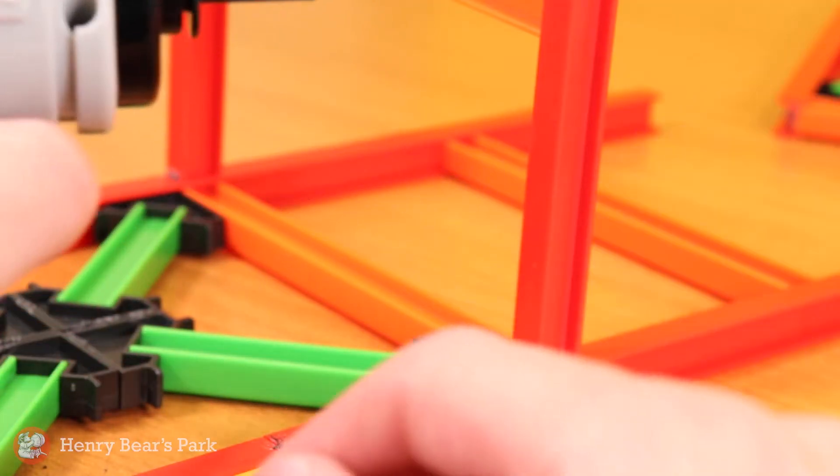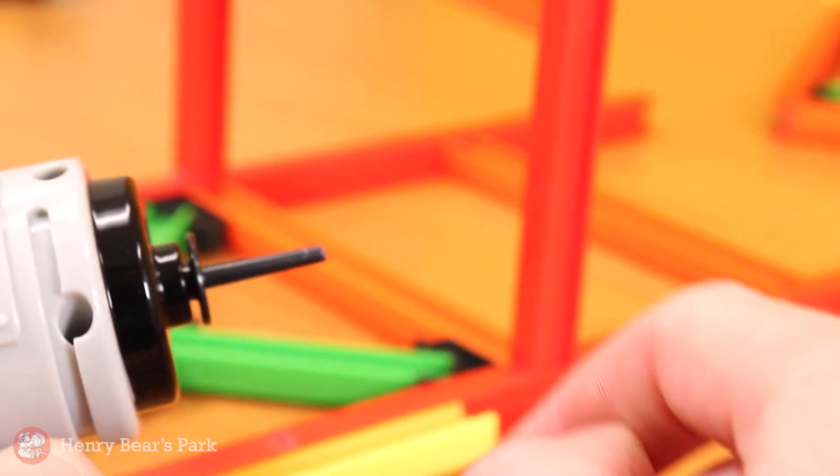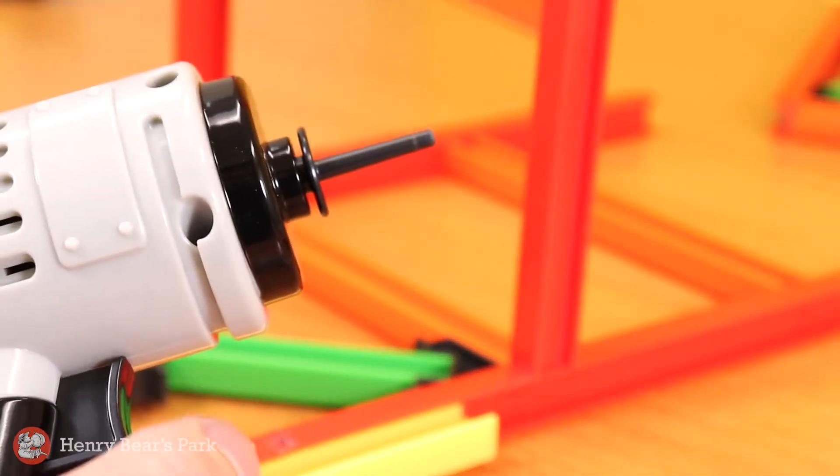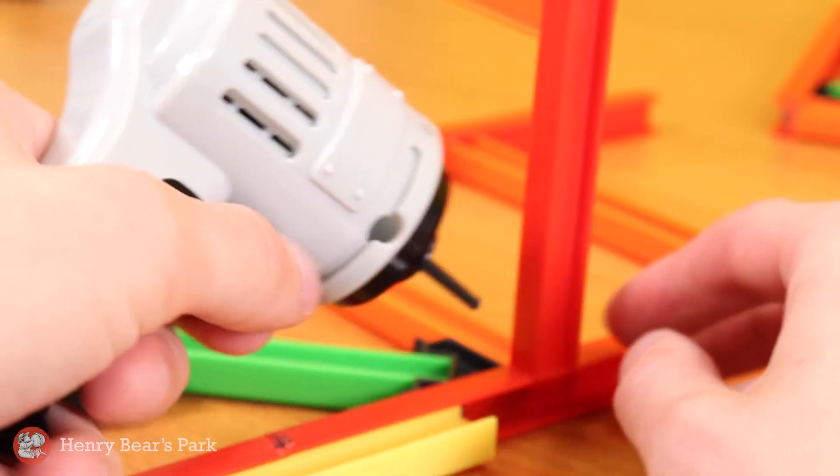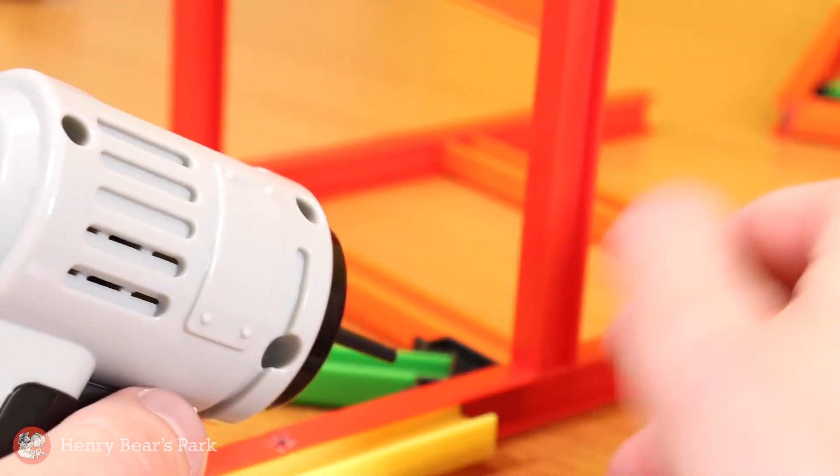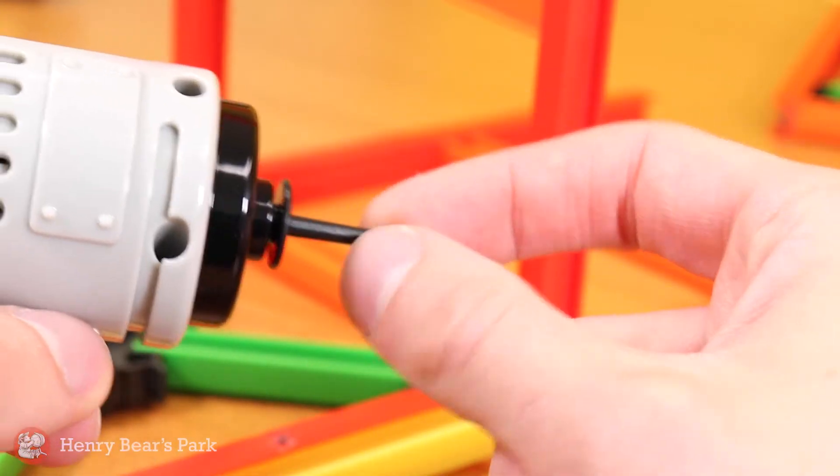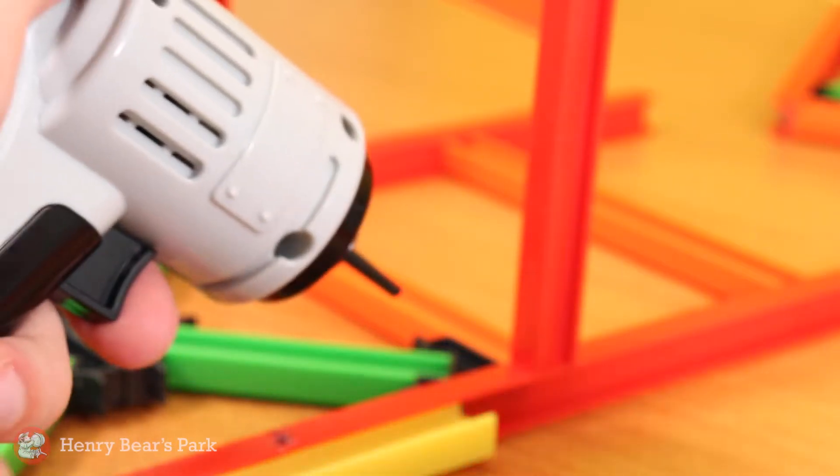All right, let me let you in on a little secret here. See this welding rod at the end of the drill here? When I press the trigger, it spins really, really fast, and it's that friction that causes these two pieces to weld together. So this rod actually will melt, and you'll see that right now.